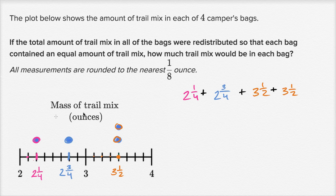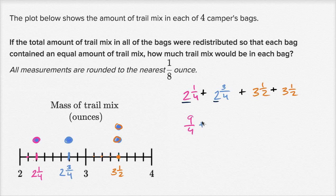Let's add two and one fourth plus two and three fourths plus three and a half plus three and a half. Two plus two is four. One fourth plus three fourths is four fourths, which equals one whole. So this part equals five. Then three and a half plus three and a half: three plus three is six, half plus half is one, so that's seven. In total you have twelve ounces.